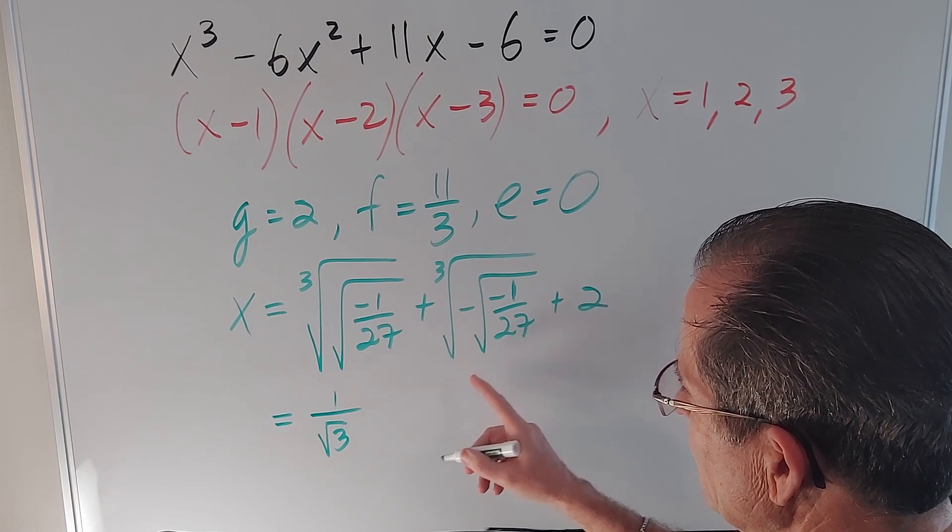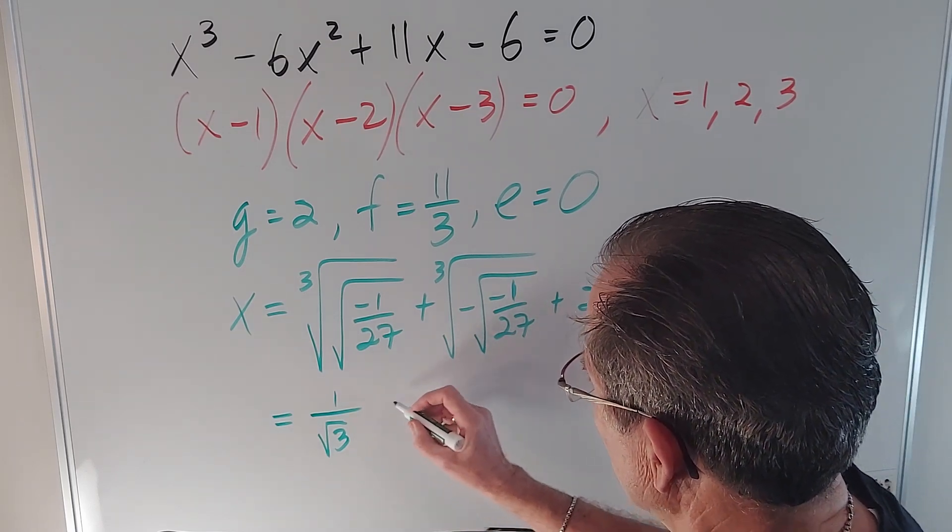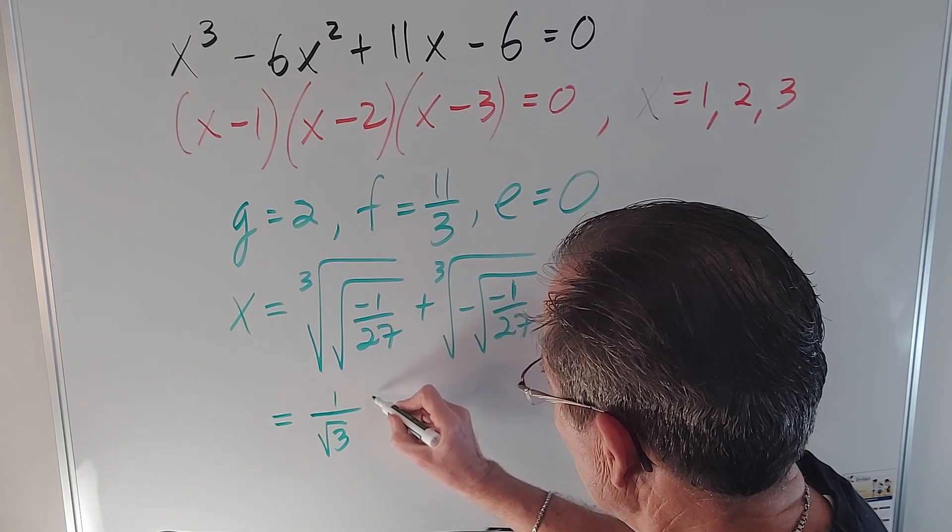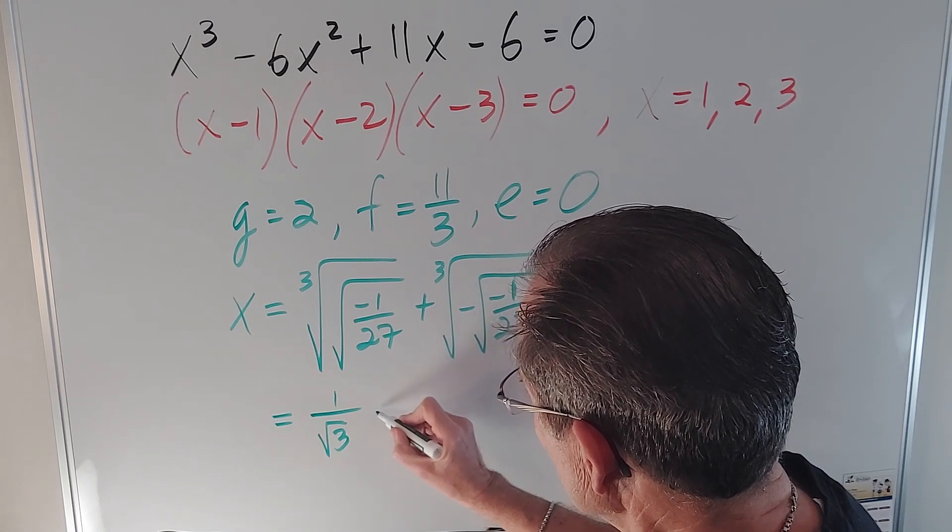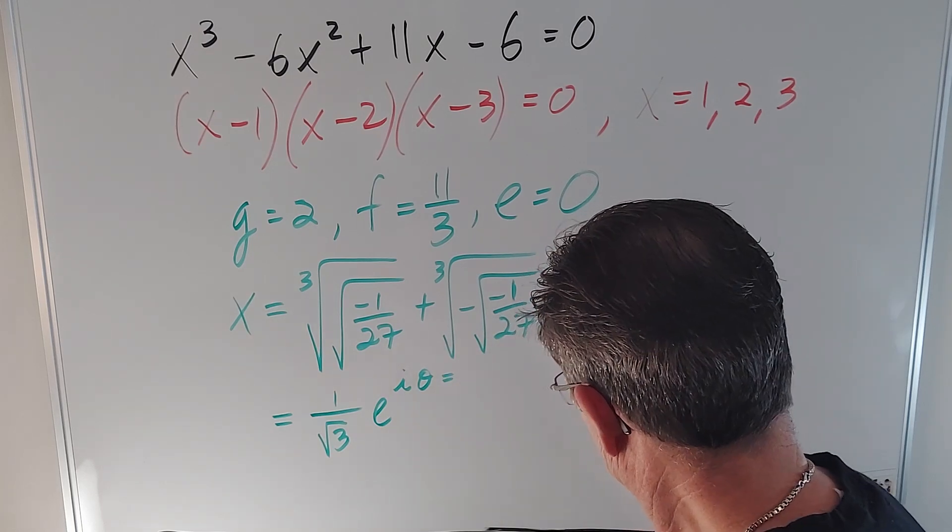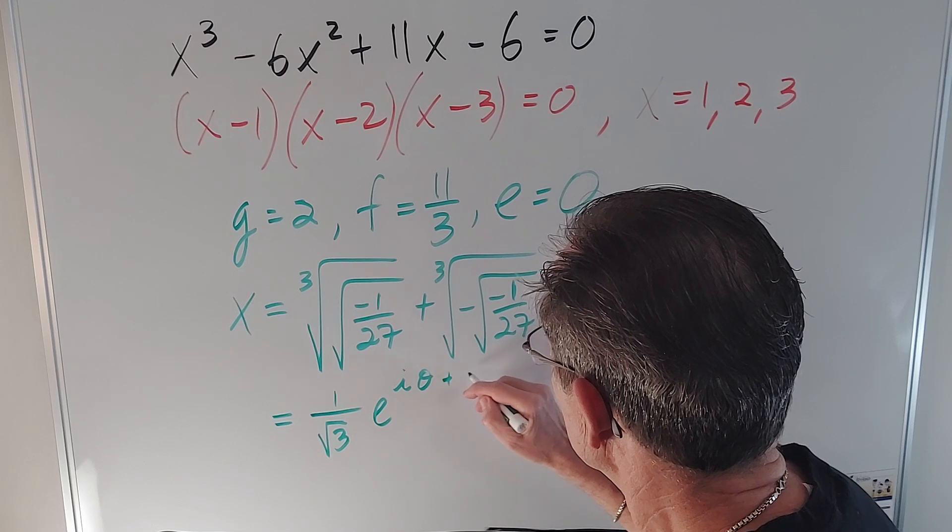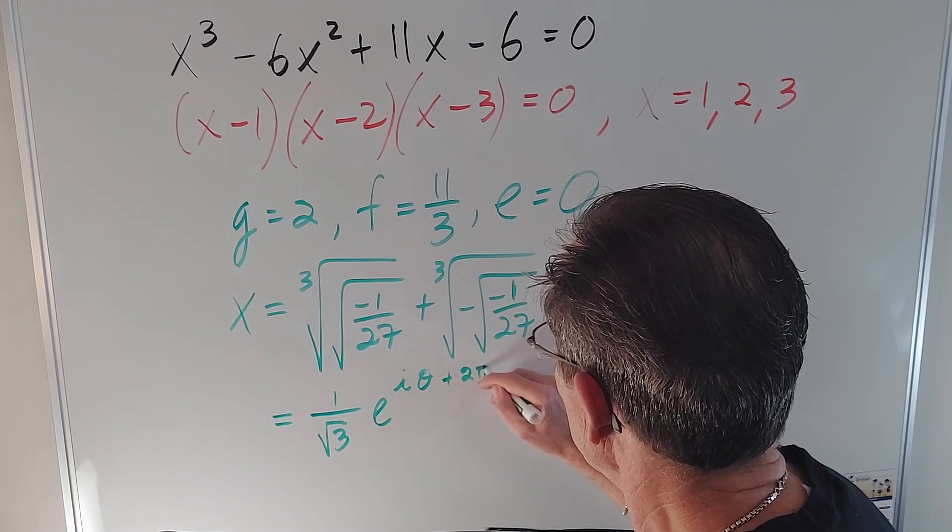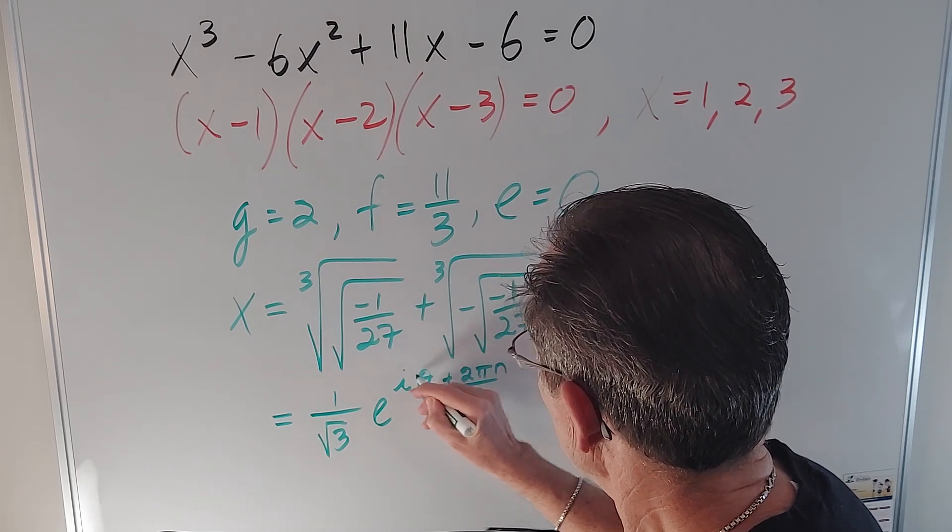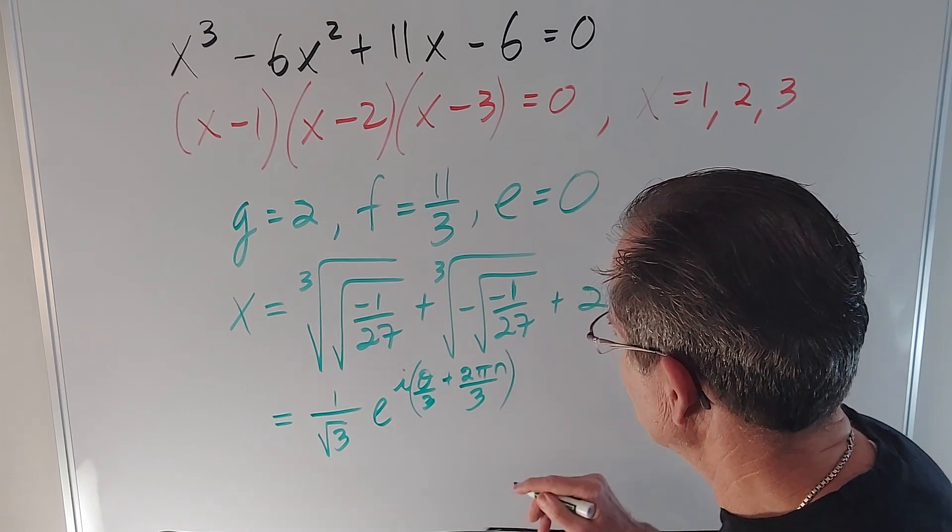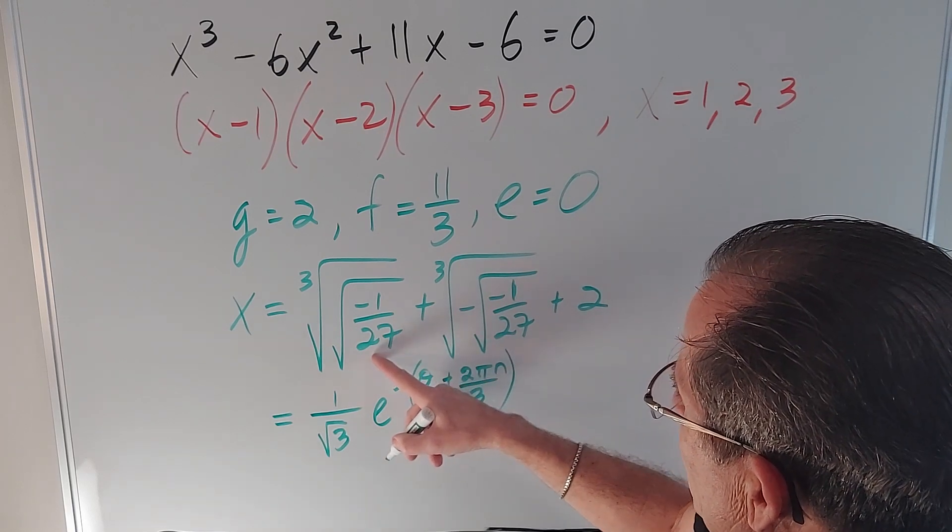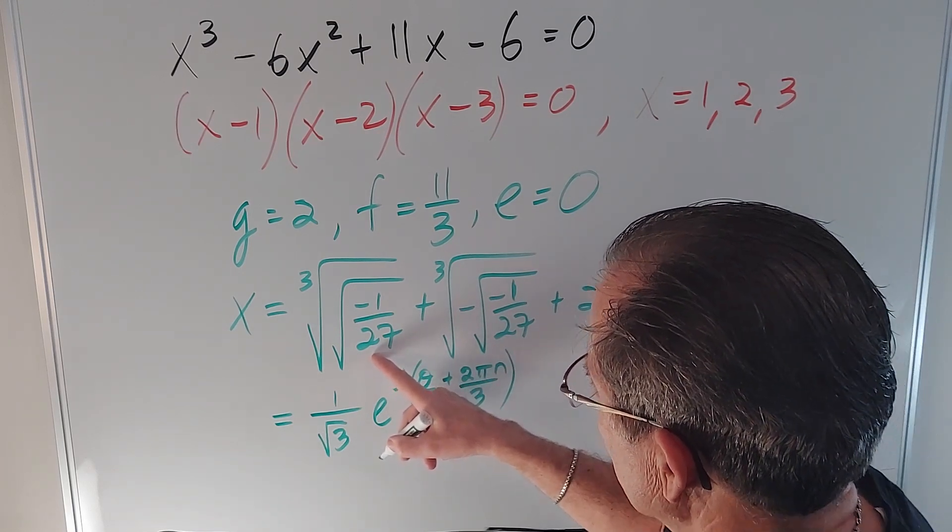So to get the value of this one, you're using DeMoivre's formula: it's going to be that times e to the i theta plus 2 pi n, where this is, they're both divided by 3. So any brackets there, which I forgot in the last video. What's theta?